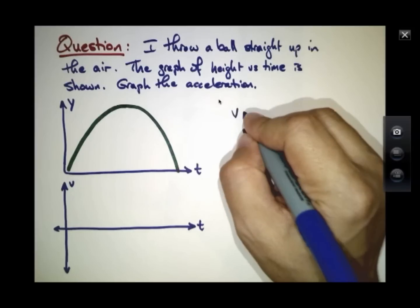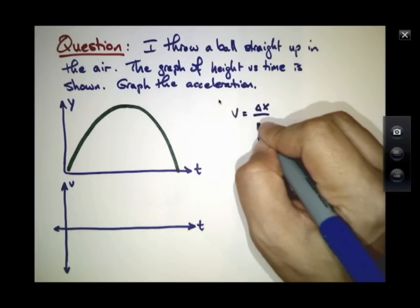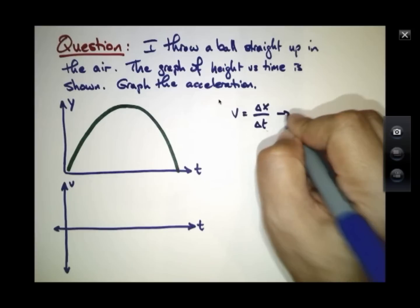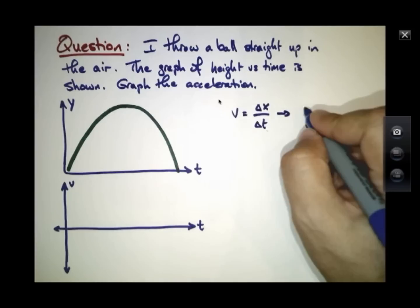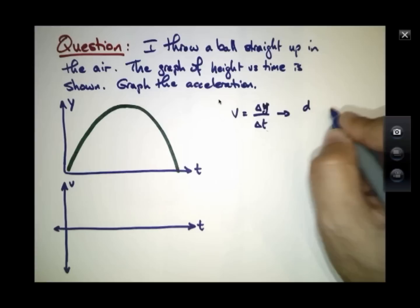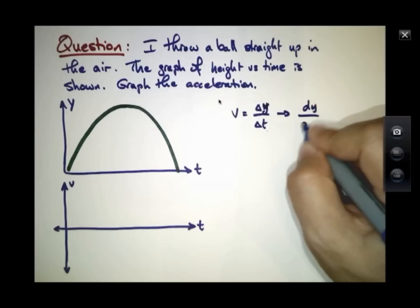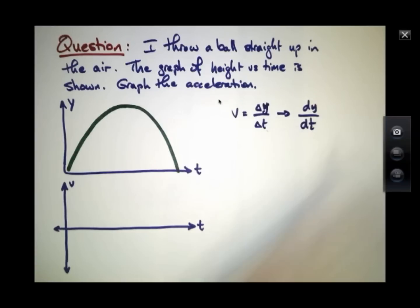But we know that acceleration is the change in velocity over time, so we first should look at velocity. Remember that velocity is the change in position over time, or at an instantaneous level is the derivative of position with respect to time. And the derivative is signified graphically by the slope of a tangent line to this graph. So let's draw some tangent lines.